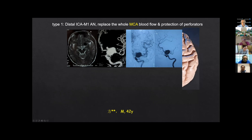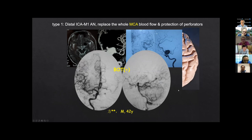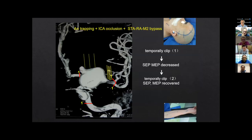This is a type one case: distal ICA to M1 segment aneurysm — quite a large aneurysm. We need to replace the whole MCA territory and protect the perforators. The balloon occlusion test was positive. With SEP and MEP monitoring, we adjusted the position of the clips — including permanent and temporary clips — to make sure to keep the perforators intact. This patient received a radial artery to MCA bypass.